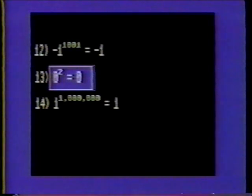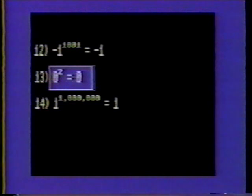Number thirteen: zero squared is zero times zero, which is zero.